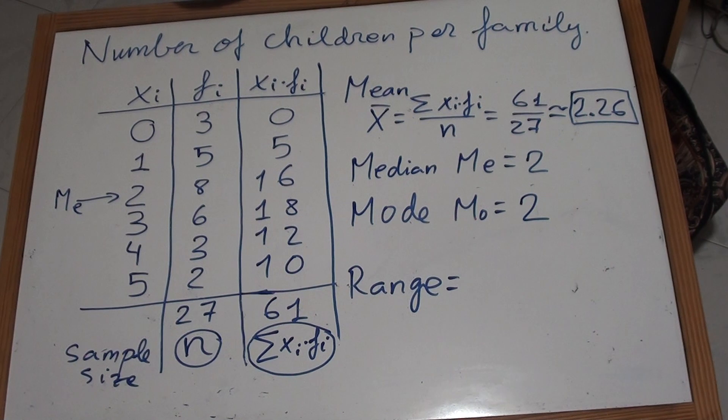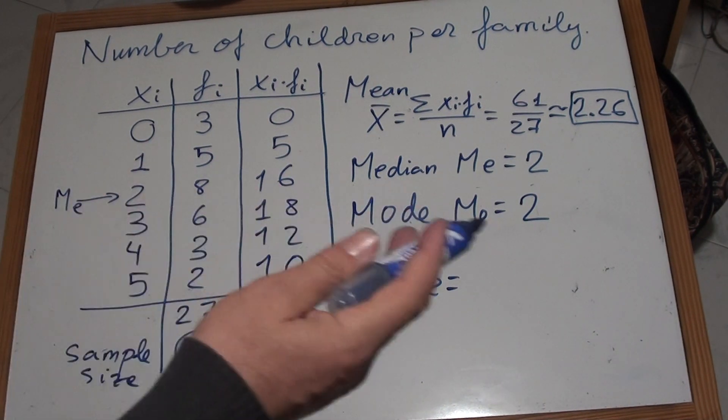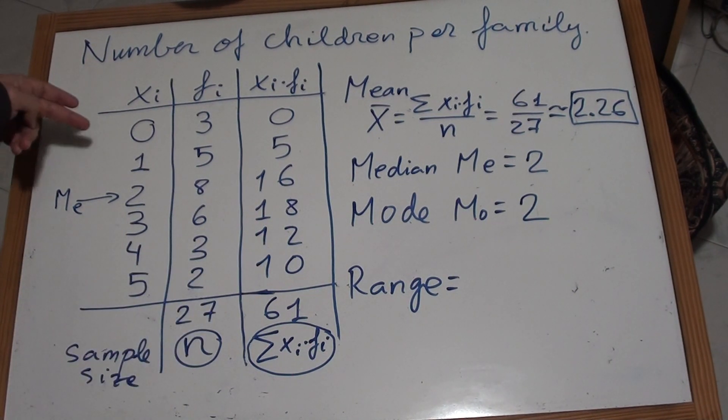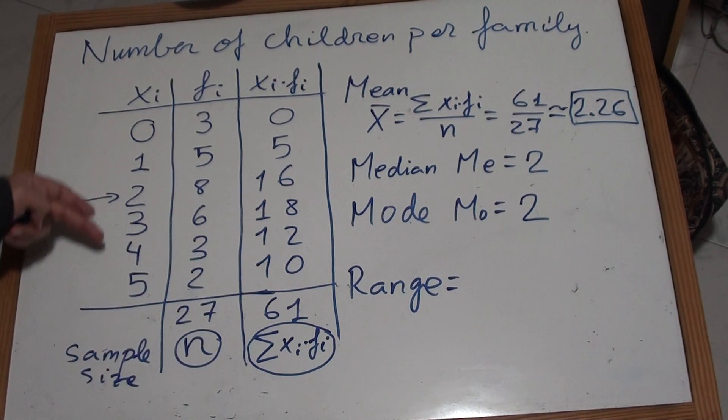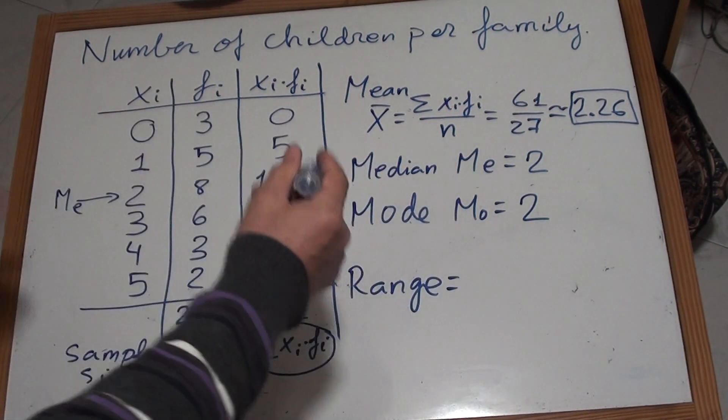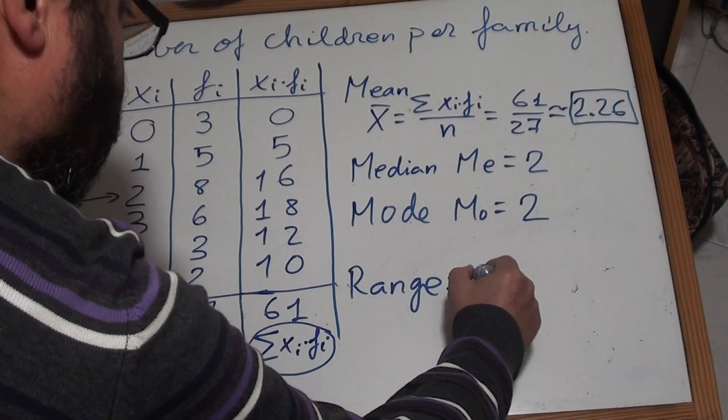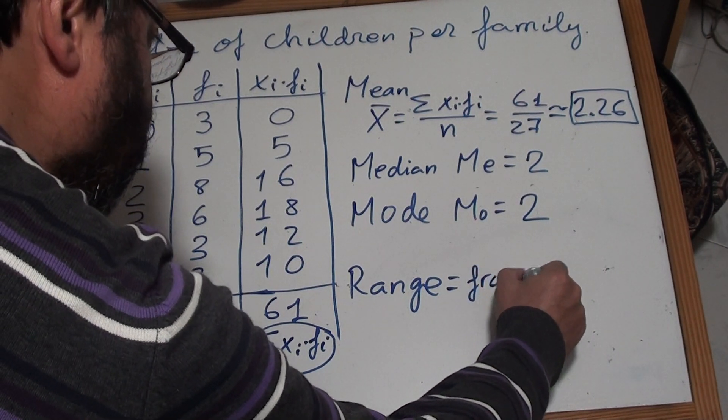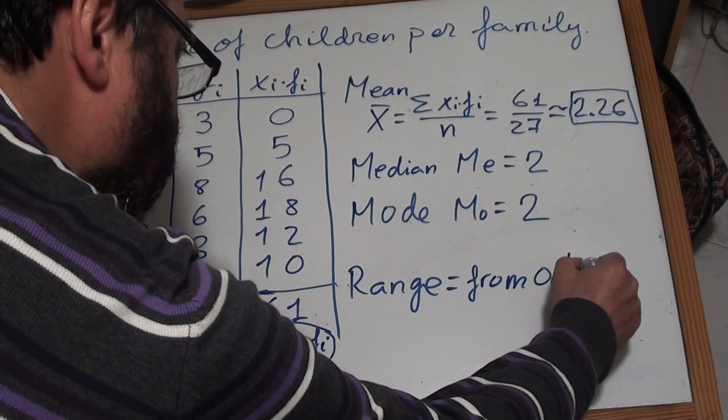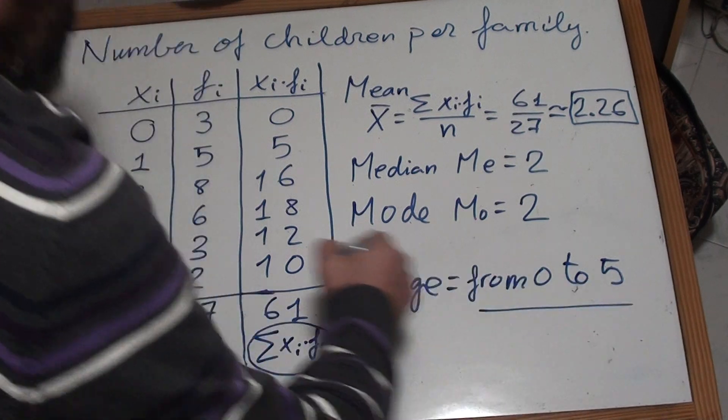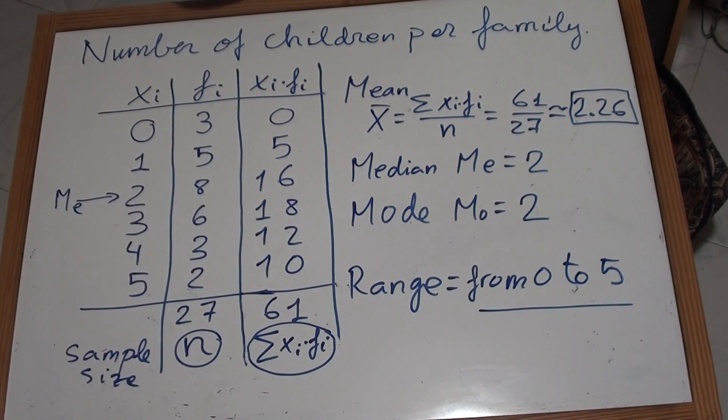And the range, the range is the dispersion of data, so from the lowest to the highest. So in this case, we would say from 0 to 5. From 0 to 5 we can say it's 5, but I'd rather say from 0 to 5 because it gives us more information. From 0 to 5 children is what we have found in our survey.